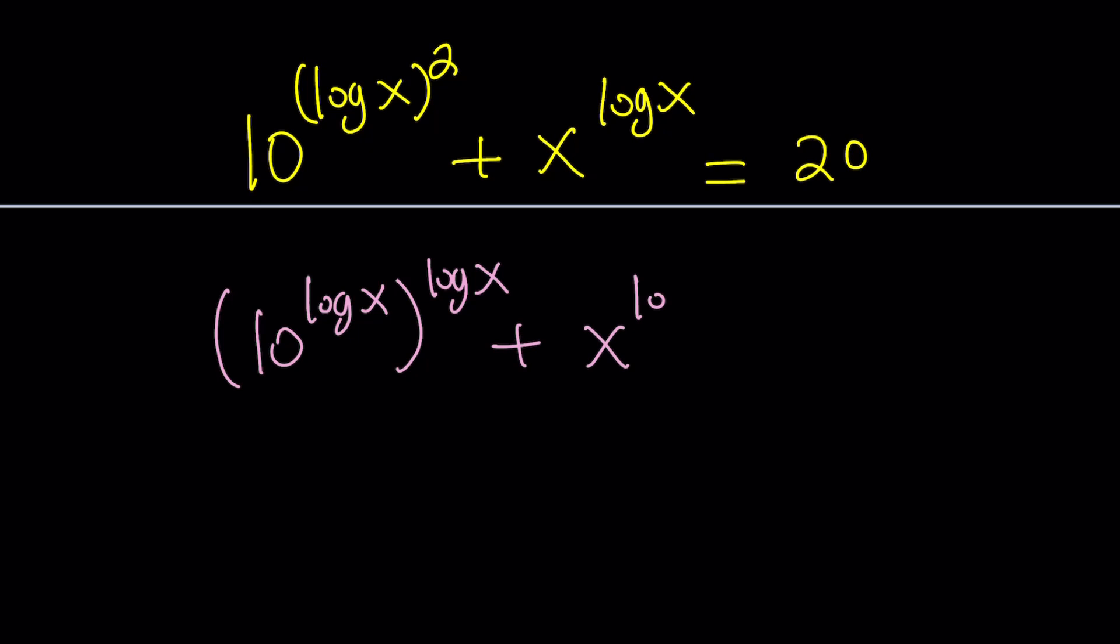And then, we're going to use our super-duper magical formula. What is 10 to the power log x? It's equal to x. So, this becomes x to the power log x plus x to the power log x is equal to 20.